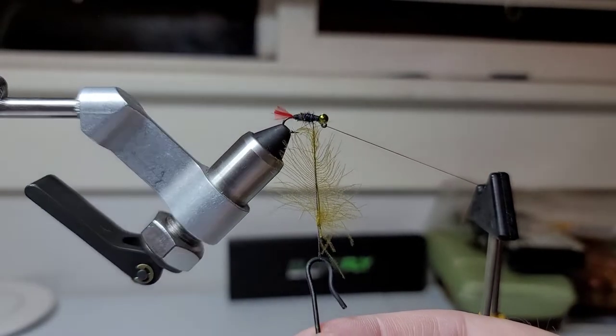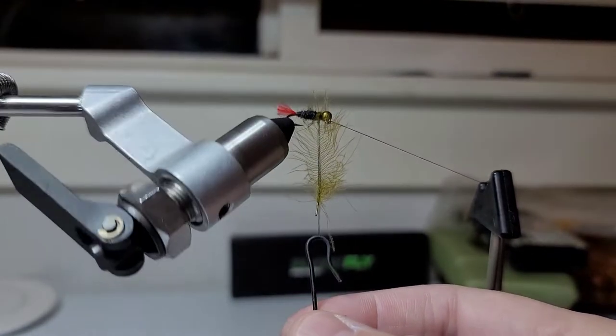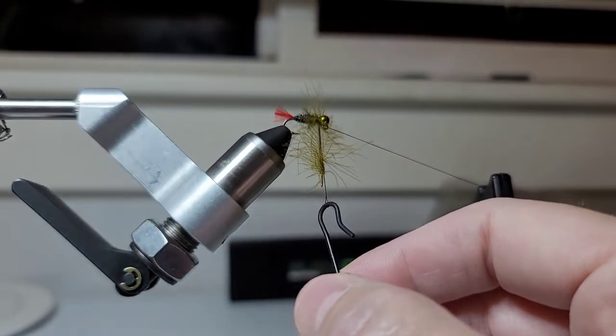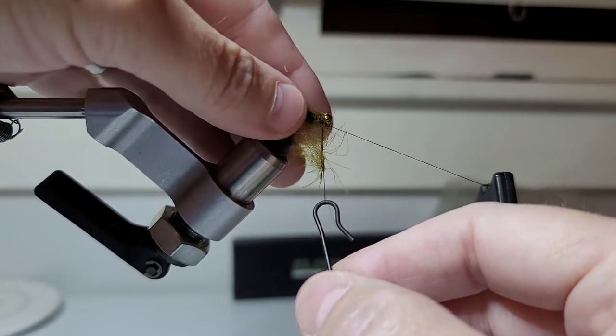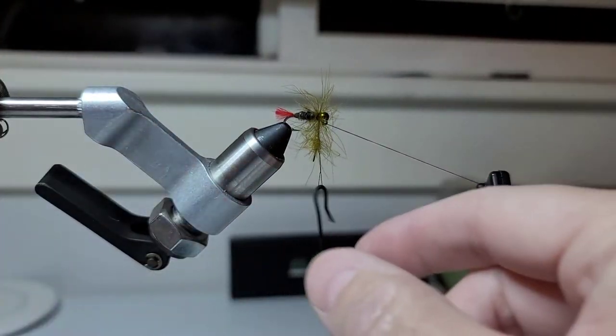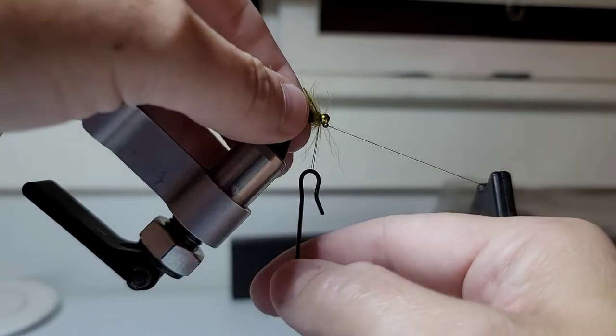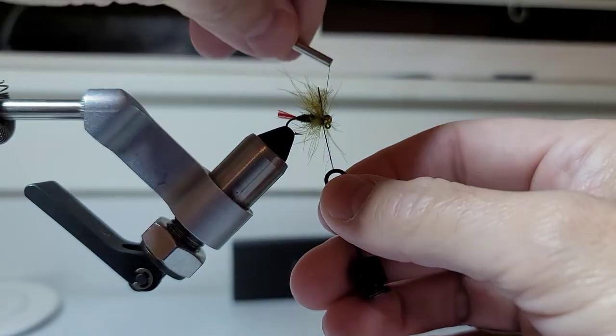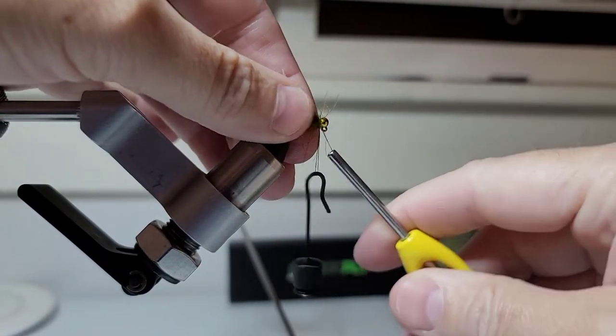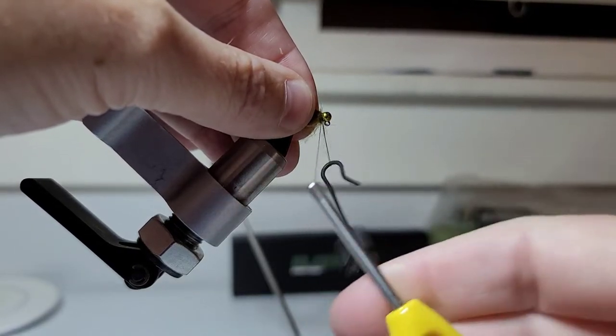And I'm just going to use my rotary vise and I'm going to start, I'm just going to take my time. I'm going to start to wrap this, and as I do, you only need a few wraps. I'm going to pull this back, pull this back. It looks really buggy.